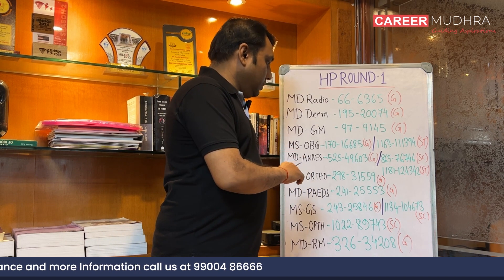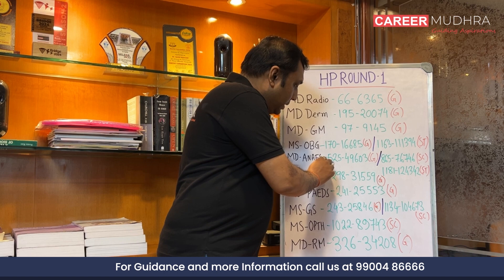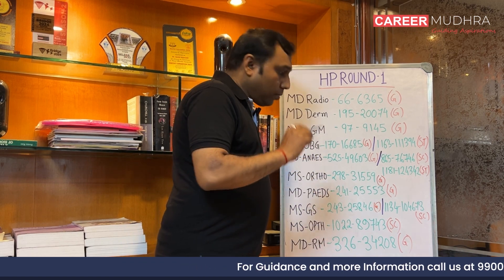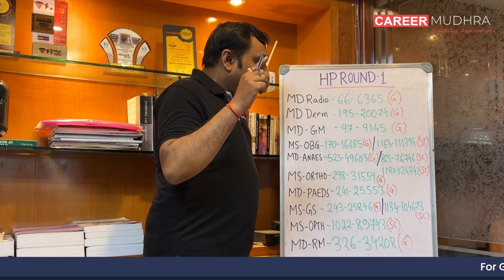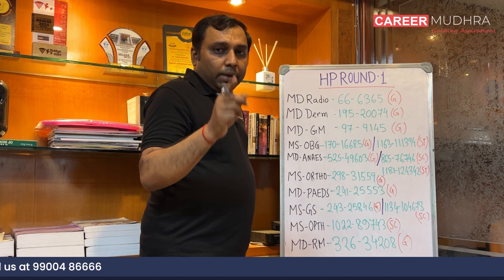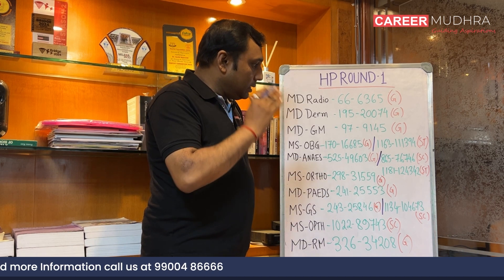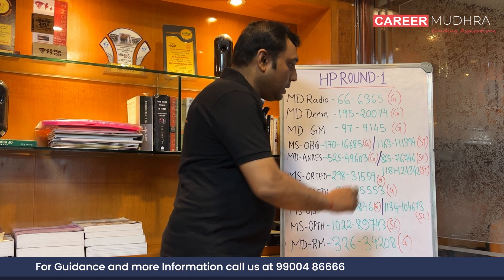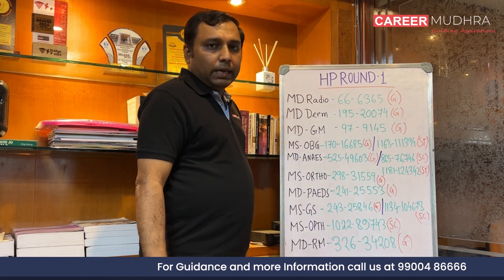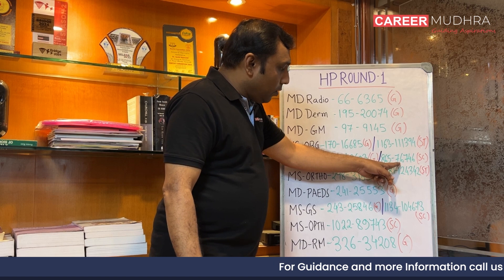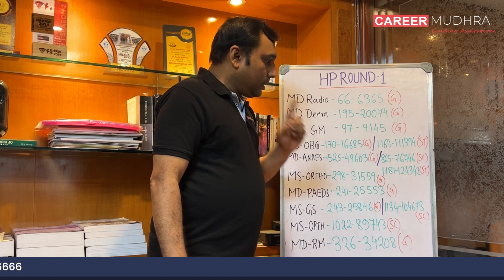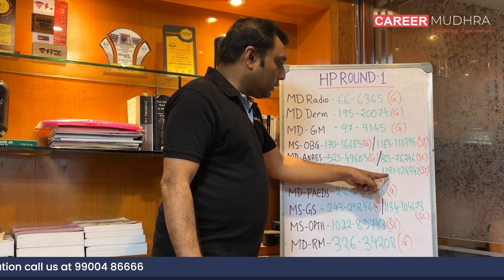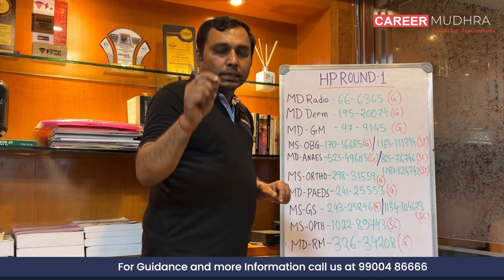For MD Anesthesia, the state rank cutoff for general category is 525, which corresponds to all-India rank 49,603. For SC category in MD Anesthesia, the cutoff is state rank 865, which converts to all-India rank 76,746. For ST candidates, the state cutoff is 1,181 and all-India rank is 1,24,342.